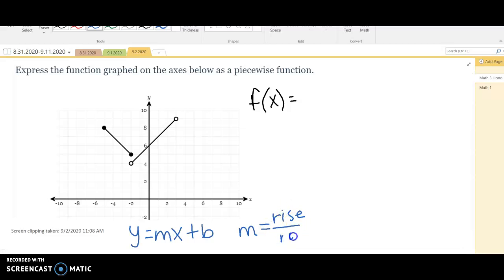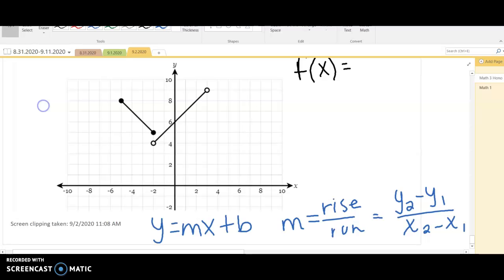Some of you guys may prefer to do the change in y's over the change in x's. Either way works, whichever strategy works best for you. So for this example I'm just going to go with the rise over run. So I'm going to find the slope of this line. I go down 1, right 1, so that's negative 1 over 1. So the slope of that first line is negative 1.